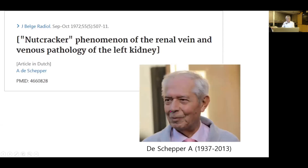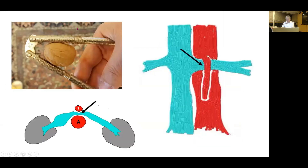This is a photograph of Dr. De Schaeffer, a Belgian radiologist who first used the term Nutcracker syndrome in his historical article in 1972. This is a nut and a Nutcracker simulating the mechanism of Nutcracker phenomenon, with a nut representing the left renal vein, and two arms of the Nutcracker representing the abdominal aorta and the superior mesenteric artery.